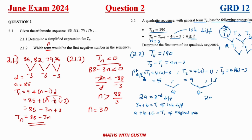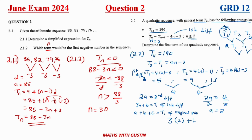Since 2a equals the second difference, 2a equals 4, so a equals 2. Now for b: 3a plus b equals 5 (the t1 of first differences), so 3(2) plus b equals 5, giving 6 plus b equals 5, therefore b equals negative 1.